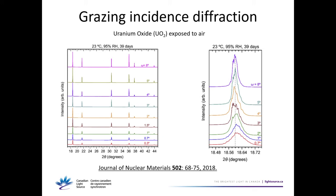With this depth sensitivity, they conclude that there is a different lattice parameter at the surface, and that it's more disordered because the peaks are broader. They get to know what is at the surface of this uranium oxide using depth-sensitive grazing incidence X-ray diffraction.